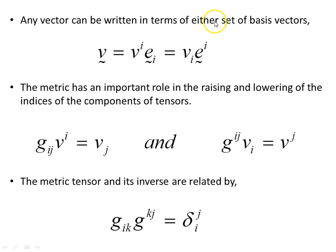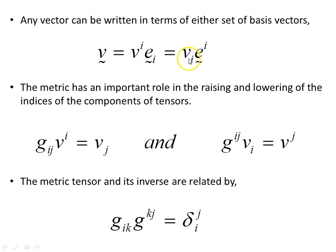Interestingly, any vector can be written in terms of either set of basis vectors. Some vector v can be written with contravariant components and covariant (tangent) basis vectors, or with covariant components and contravariant (surface normal) basis vectors.